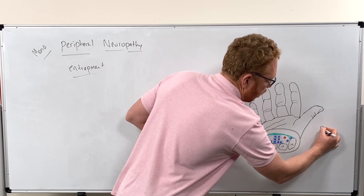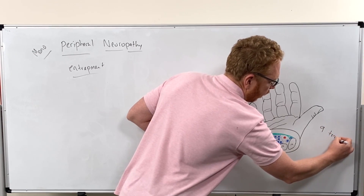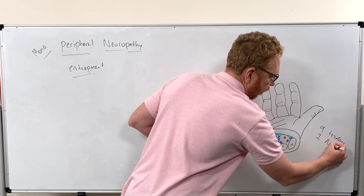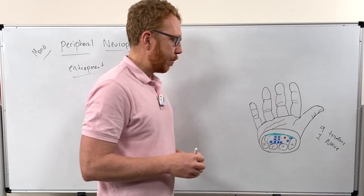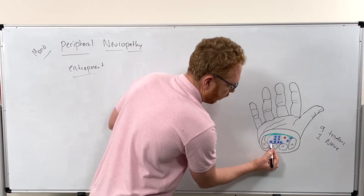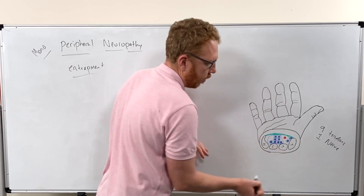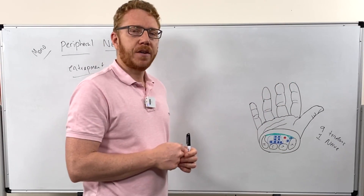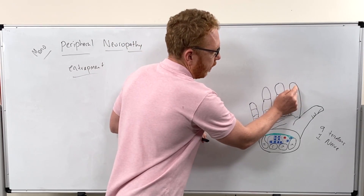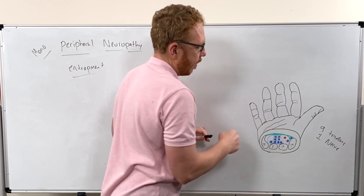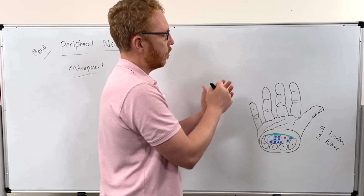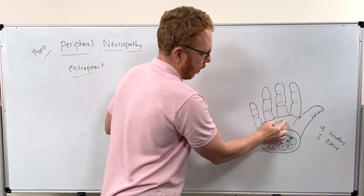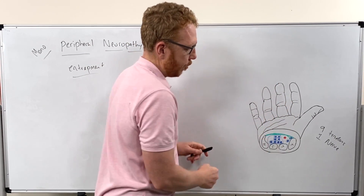Inside the carpal tunnel there are nine tendons and one nerve. Starting deepest, there are four tendons for the flexor digitorum profundus going to digits two, three, four, and five — to flex them at the distal ends. That's the deep group. On top of these are another four tendons for the flexor digitorum superficialis, which doesn't go as far into the digits — it's more proximal. That's eight tendons done.